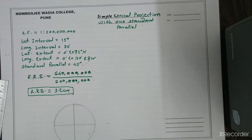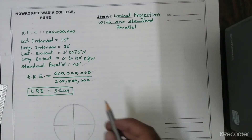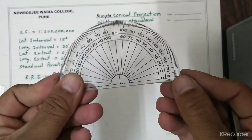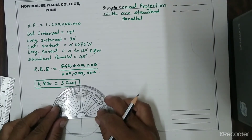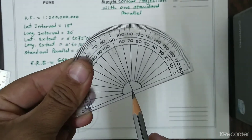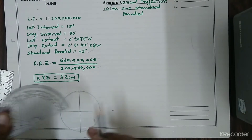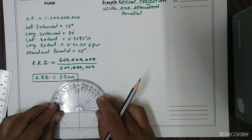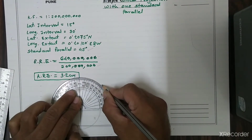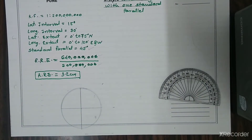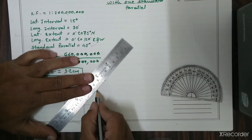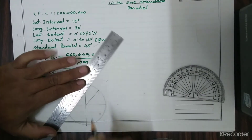Now I need to plot the standard parallel, which is 45 degrees. I hold the protractor at this point, matching the center with the circle's center and keeping the vertical line aligned. I mark the 45-degree point and then use the scale between the center and this point to draw one line.